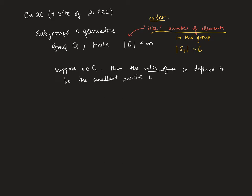Then the order of that element X is defined to be the smallest positive integer n for which X to the n is the group identity. And our notation for that is O, little o of X, the order of X.